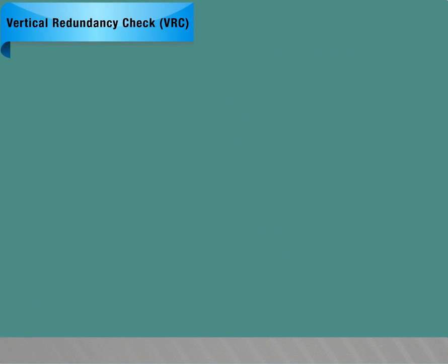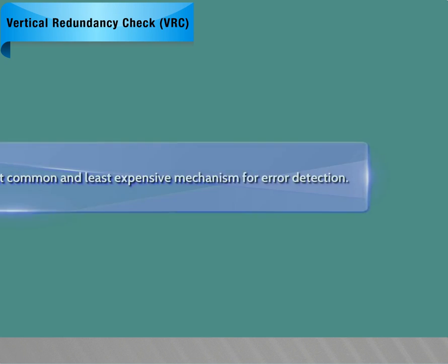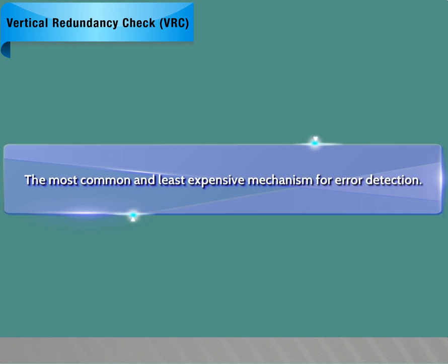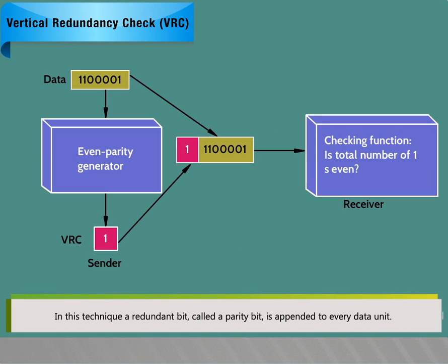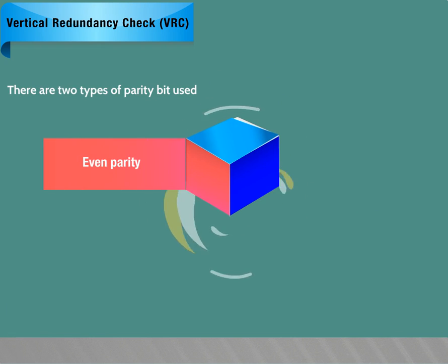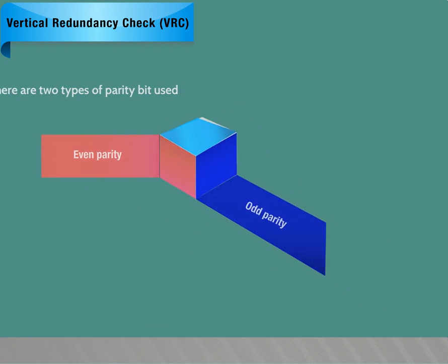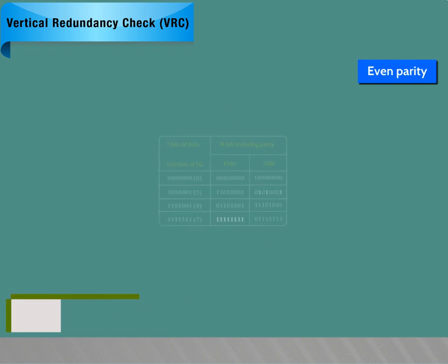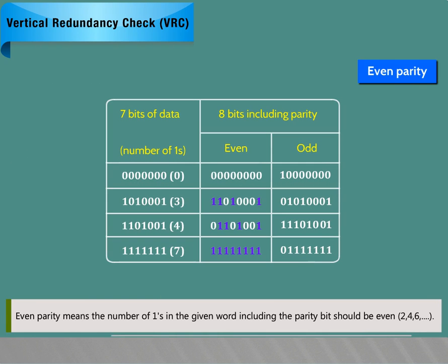Vertical redundancy check (VRC) is the most common and least expensive mechanism for error detection. In this technique, a redundant bit called a parity bit is appended to every data unit. There are two types of parity bits used. Even parity means the number of ones in the given word including the parity bit should be even, i.e. 2, 4, 6 and so on.